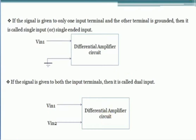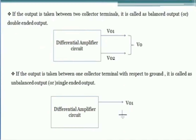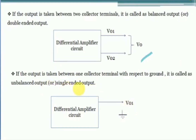Similarly, considering the output response: if the output is taken between two collector terminals, then it is called a balanced output, meaning the potential difference between the two individual collector outputs is measured — this is called a balanced output or double-ended output differential amplifier. If the output is taken between one collector terminal with respect to ground, then it is called an unbalanced output, single-ended output, or floating output.